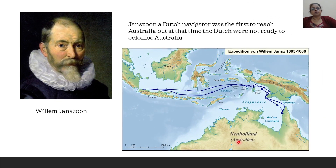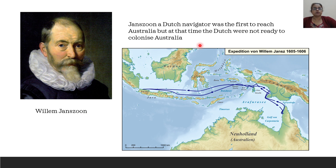Australia was first sighted by a Dutch navigator whose name was William Jan Zwan. He first reached Australia in the year 1606. However, during that time, the Dutch were not ready to colonise Australia.